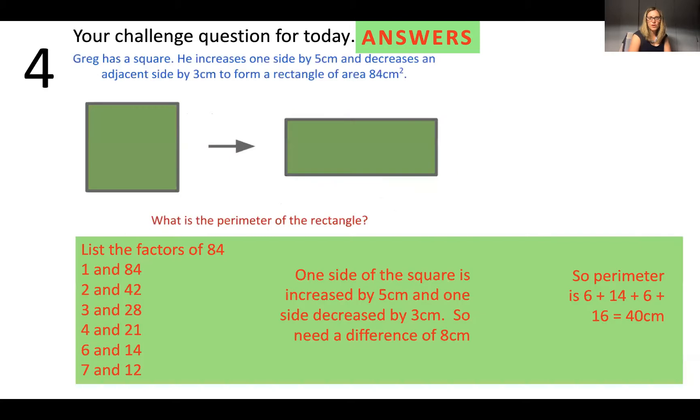Moving on to that final question. We start with a square. We turn it into a rectangle. And we do that by adding five centimeters to one side length and subtracting the three centimeters from the other side length. Now, there's actually three different ways of doing this that I've put on here. The way that I did it was I looked at the factors of 84 because I knew what I was trying to find was factors of 84, where the difference between the two numbers is the difference between adding five and subtracting three.